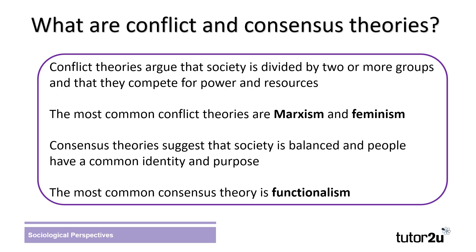Conflict and consensus theories are two different approaches to studying society which have opposing views. Conflict theorists argue that society is divided into two or more groups that are in competition for power and resources. The most common conflict theories are Marxism, which looks at class conflict, and feminism, which looks at conflicts between genders. Consensus theories, on the other hand, suggest that society is more balanced, and that people have a common identity and purpose — they agree on society's norms and values. The most common consensus theory is functionalism.